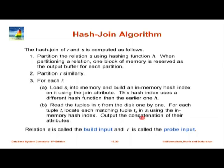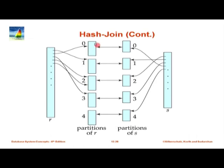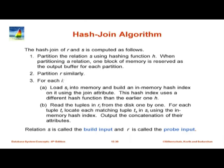The basic idea: partition the relations into smaller pieces such that each s_i fits in memory. Load each s_i fully into memory and build a hash index — this is the build input. Then take the tuples of r_i and probe the in-memory index — r is called the probe input. Find matches and output them, then move to the next r tuple. Note that r_i does not have to fit in memory, because we are not loading all of r_i at once; only the s_i's need to fit in memory.